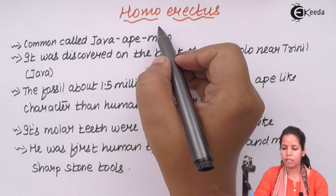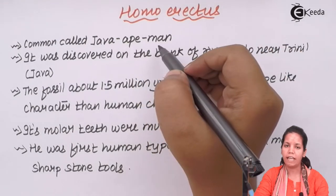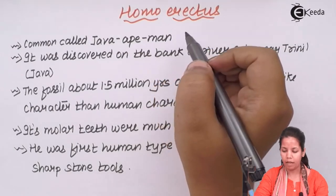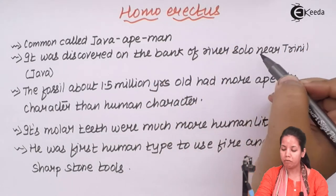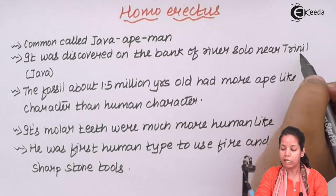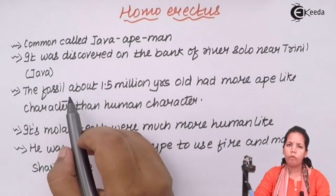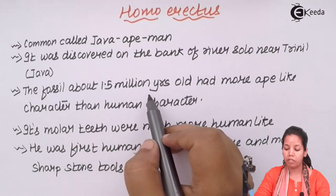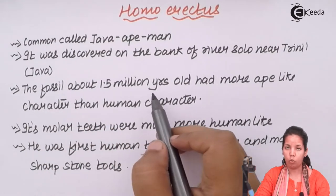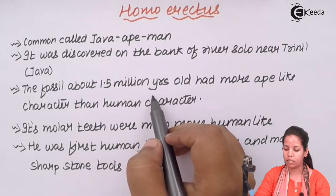Homo erectus, or Java ape-men, was discovered on the banks of River Solo near Trinil, Java. The fossils of this man were dated as 150 million years old by the process of carbon dating.